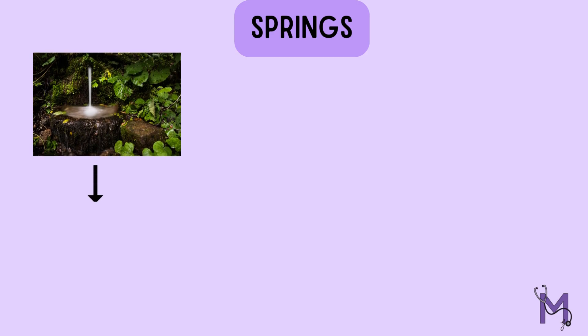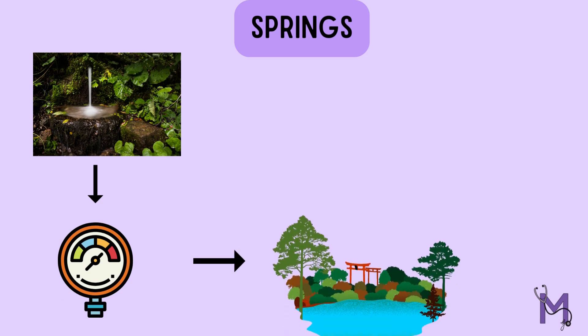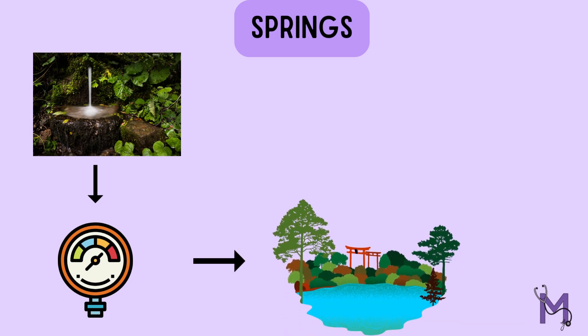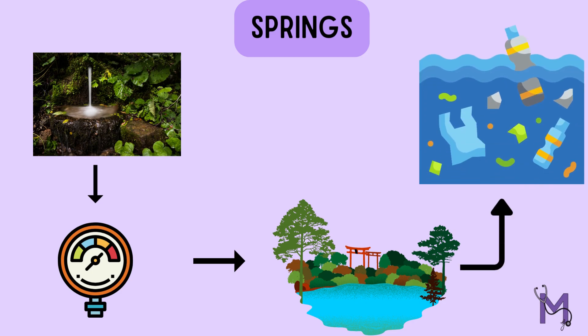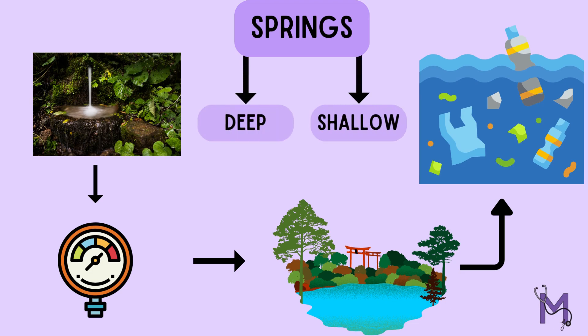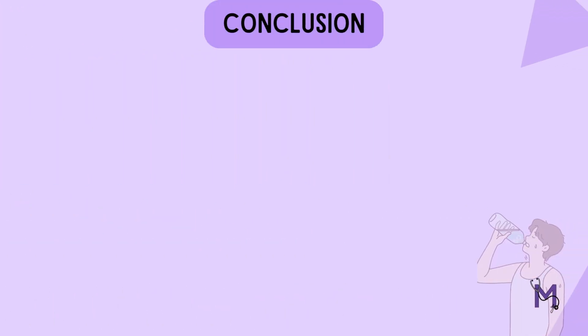Lastly, we have springs which, despite looking like surface water, come from beneath the ground through a small opening. The water spurs out due to pressure and then becomes surface water. Hence, the main source of springs is groundwater. Since this water is exposed, it can easily get contaminated. Springs too, like wells, can be deep and shallow.